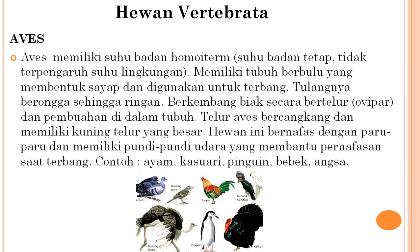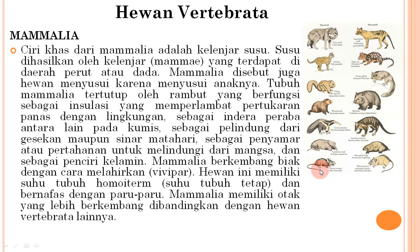Aves (burung): memiliki suhu badan tetap tidak terpengaruh suhu lingkungan; memiliki tubuh berbulu membentuk sayap untuk terbang; tulangnya berongga sehingga ringan; berkembang biak secara bertelur (ovipar) dan pembuahan di dalam; telur aves bercangkang dan memiliki kuning telur yang besar. Bernapas dengan paru-paru dan memiliki pundi-pundi udara yang membantu pernapasan saat terbang. Contoh: ayam, kasuari, penguin, bebek, dan angsa.